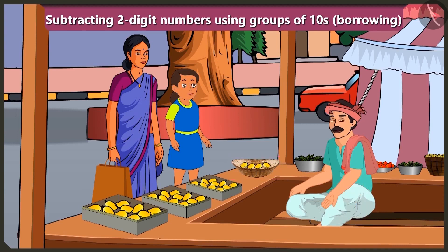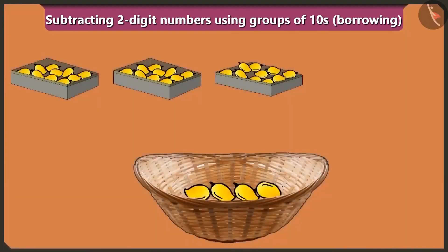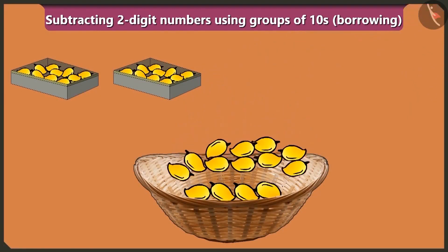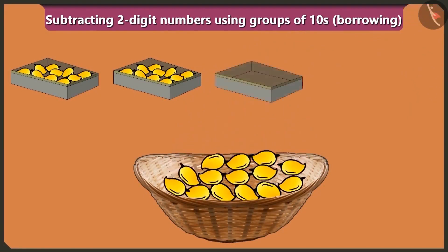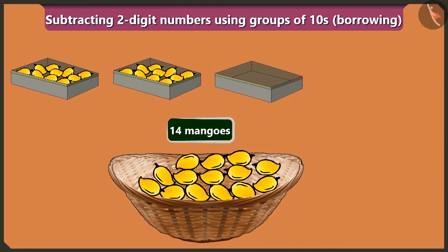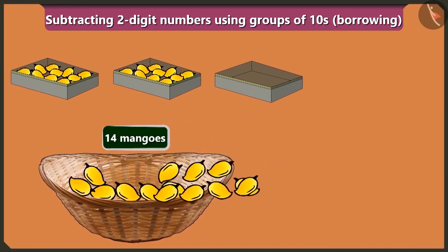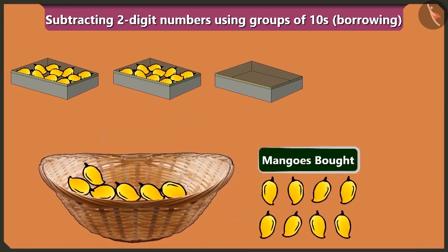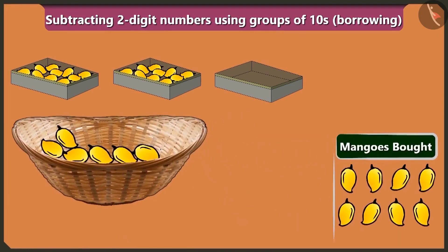Come on, child. I will empty one box of ten mangoes in this basket. So look, now there are ten and four — fourteen mangoes in this basket. Bubbly, now tell me, if you will buy eight mangoes out of the fourteen mangoes, then total how many mangoes would the fruit seller be left with?